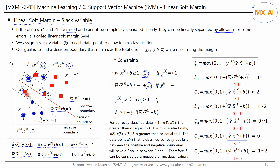For example, for misclassified data point x6, we shift the positive boundary down by zeta 6, so even the misclassified x6 can satisfy this constraint. For the data points where y is negative one, we can shift the negative boundary up by positive zeta. For example, for misclassified data point x2, we shift the negative boundary up by zeta 2, so x2 can also satisfy this constraint. For correctly classified data points, the zeta is zero, so the positive and negative boundaries do not shift. We'll see why the zeta is zero in a moment.